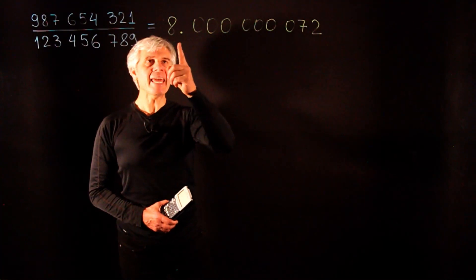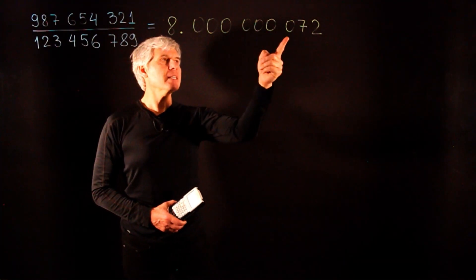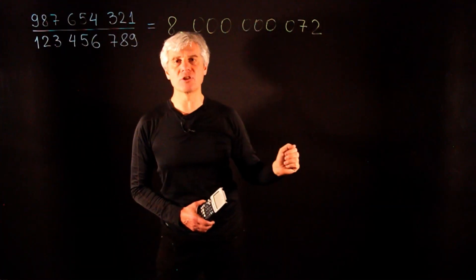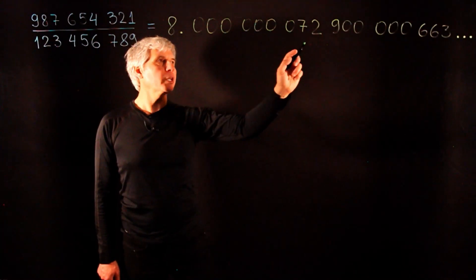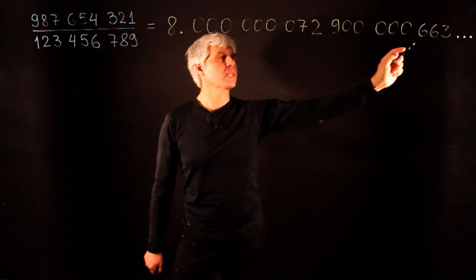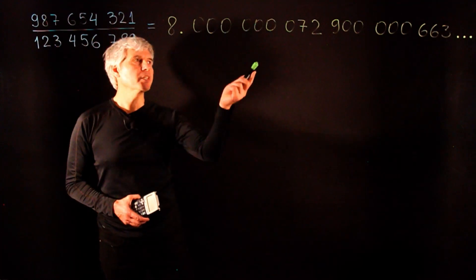The result will surprise you. It's 8 followed by 7 zeros and then some nonzero digits. This number will look peculiar if we include more digits in the answer. What's going on here?